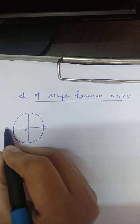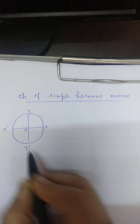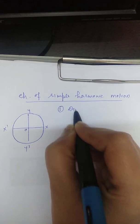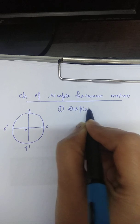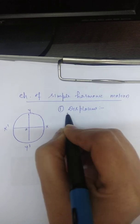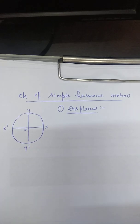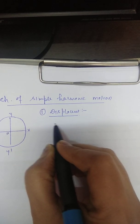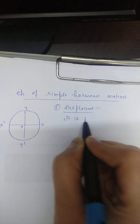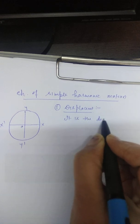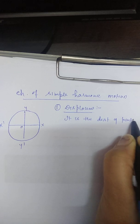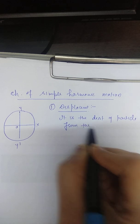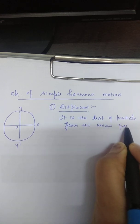This is x-o-x dash and this is y-o-y dash. The first characteristic of simple harmonic motion is displacement. Displacement is the distance of the particle from the mean position at any instant.